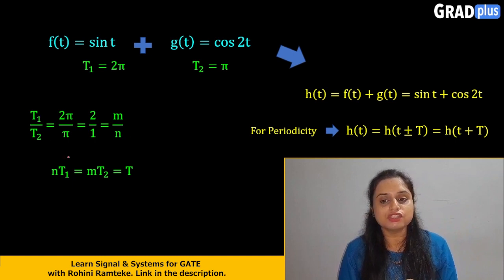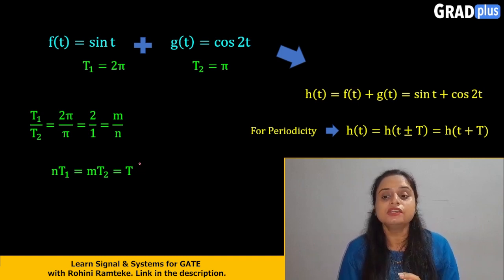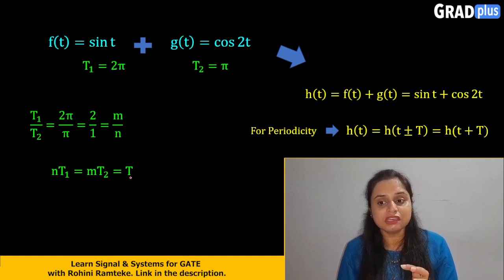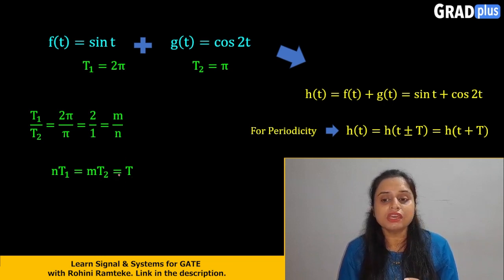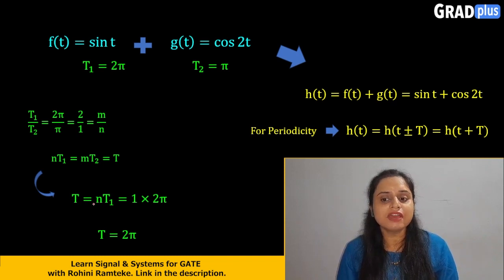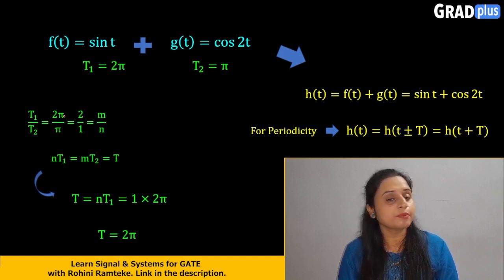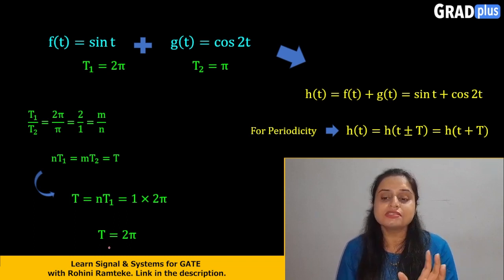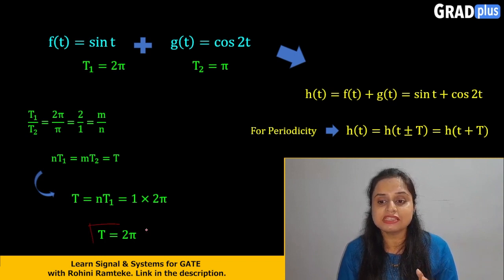If we cross-multiply this equation, we get n·T1 = m·T2, which equals your total time period T. For finding the value of T, we equate T = n·T1. The value of n here is 1, and the value of T1 is 2π. Substituting the values, we get the fundamental time period T = 2π.